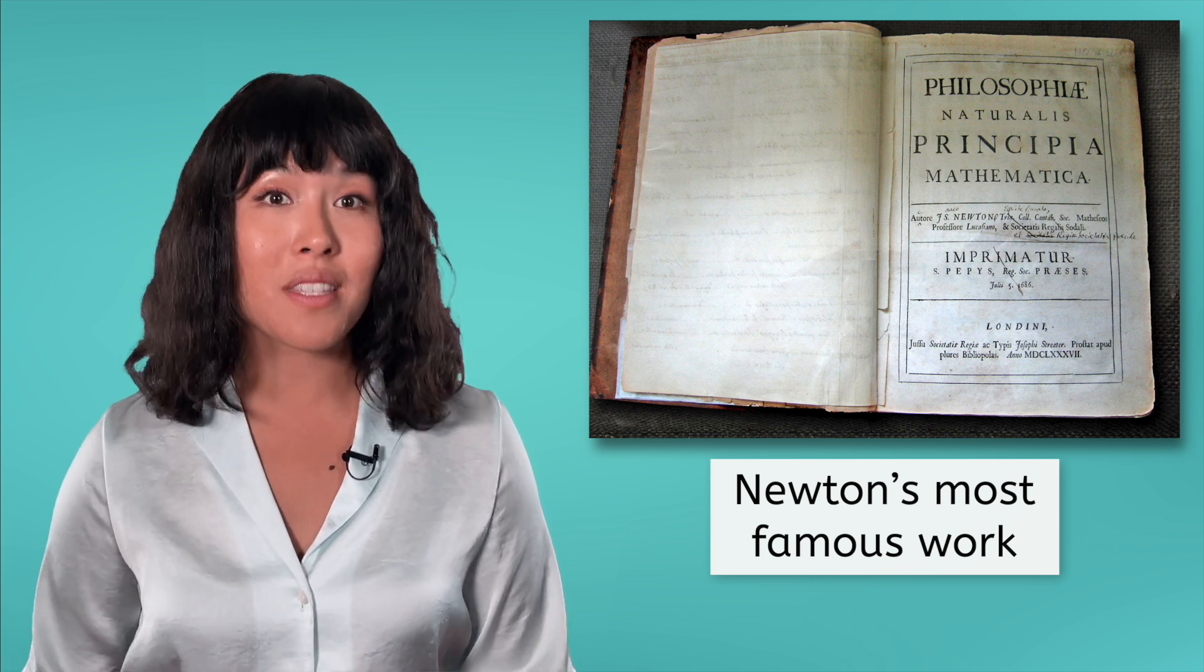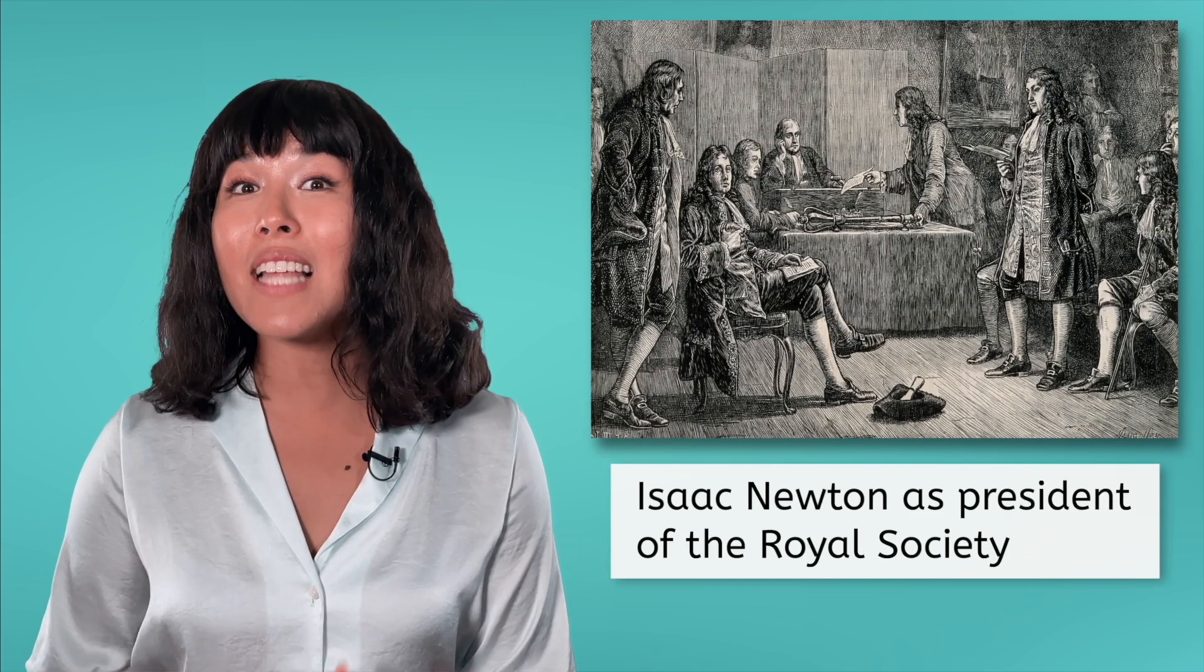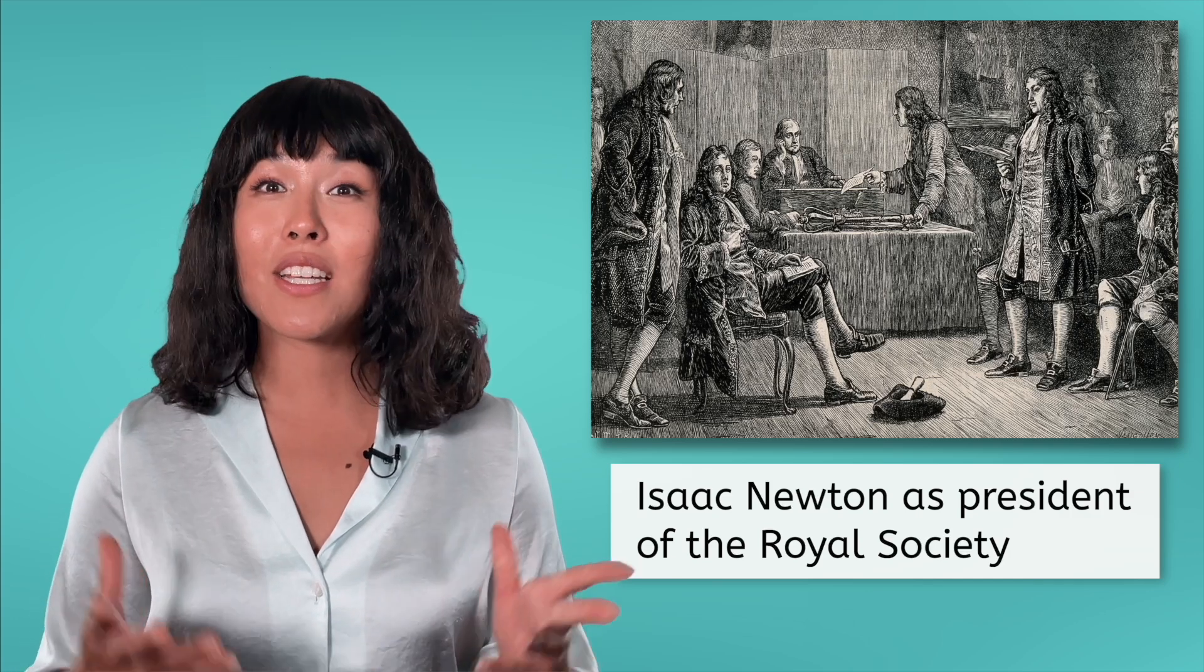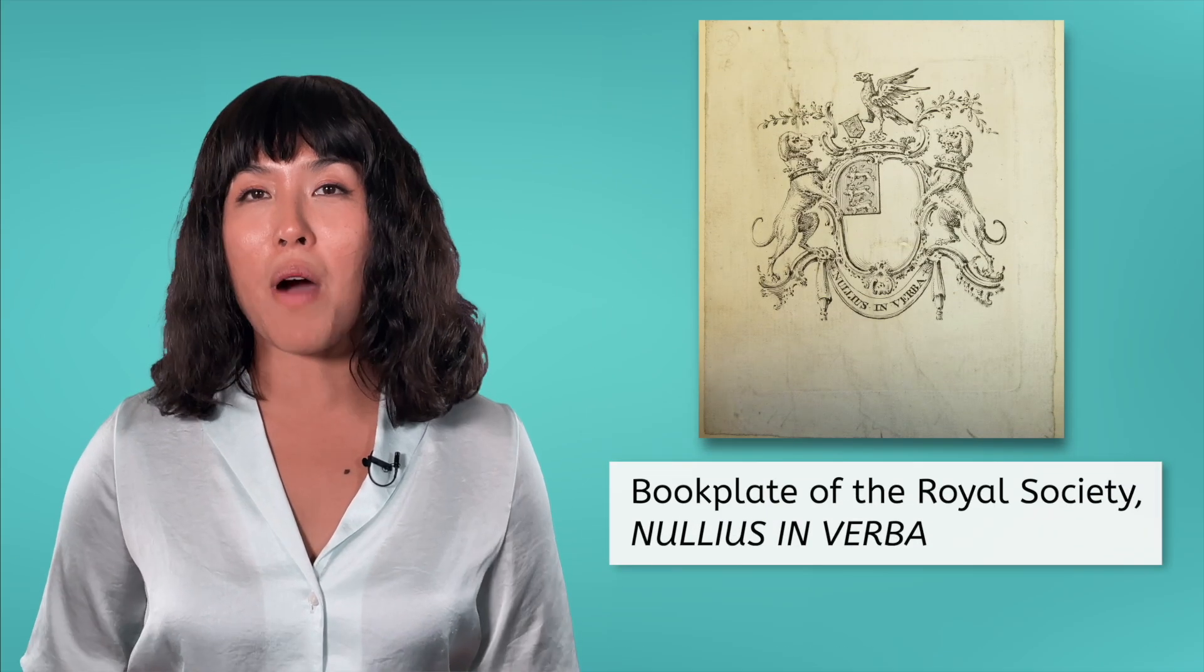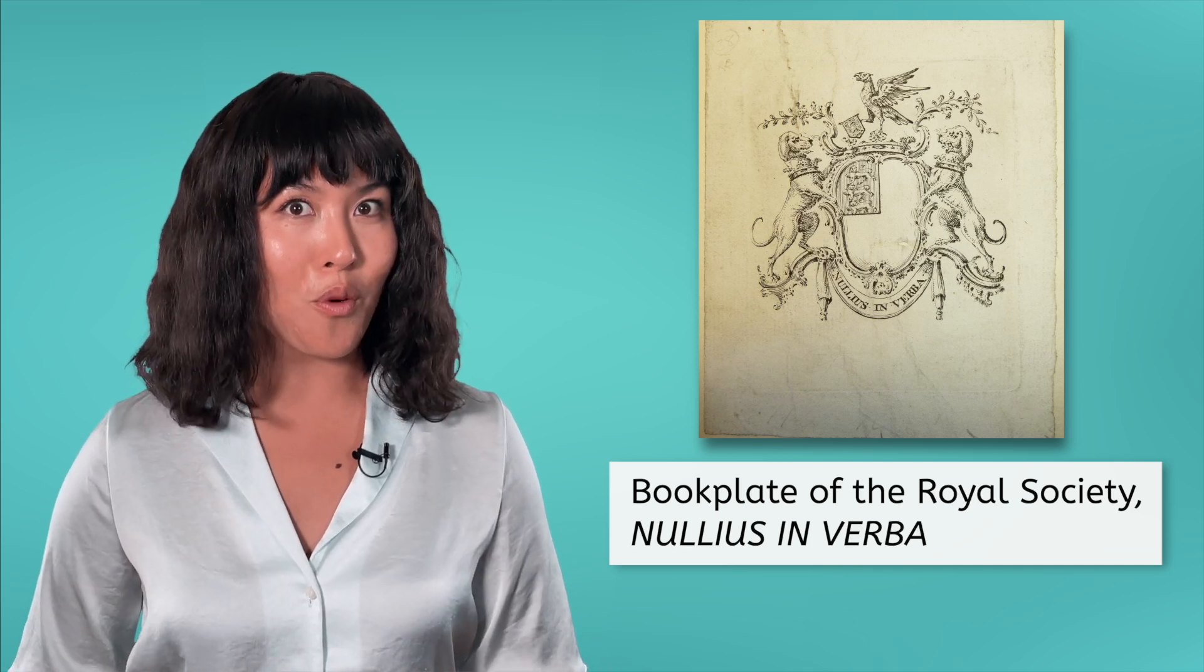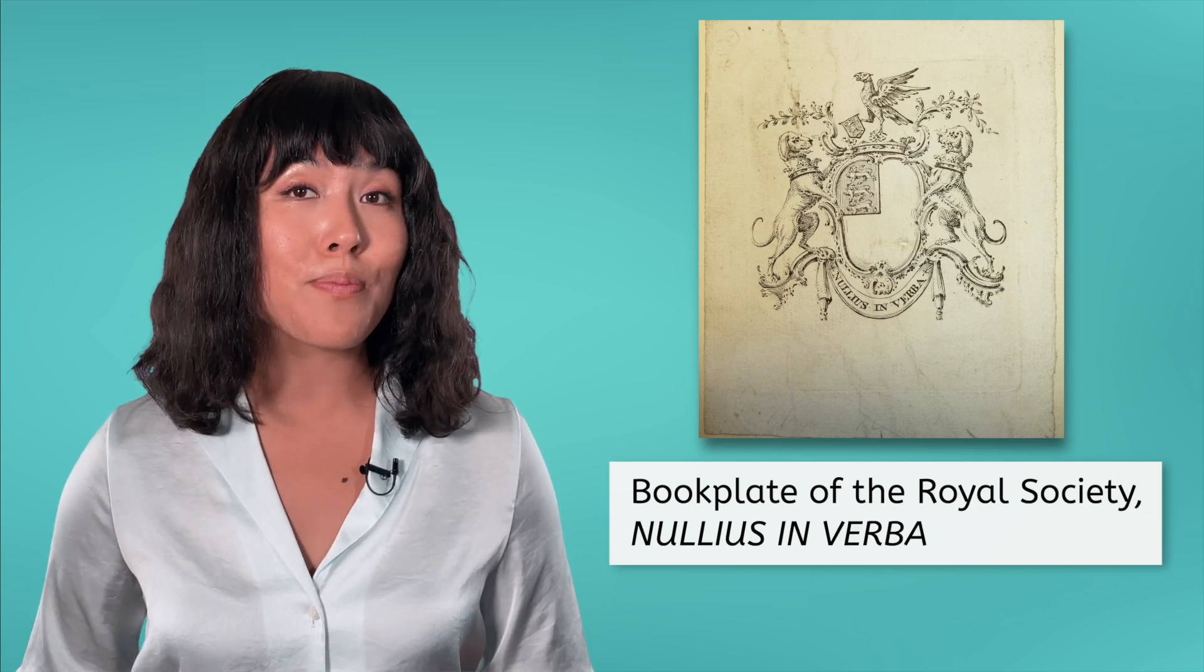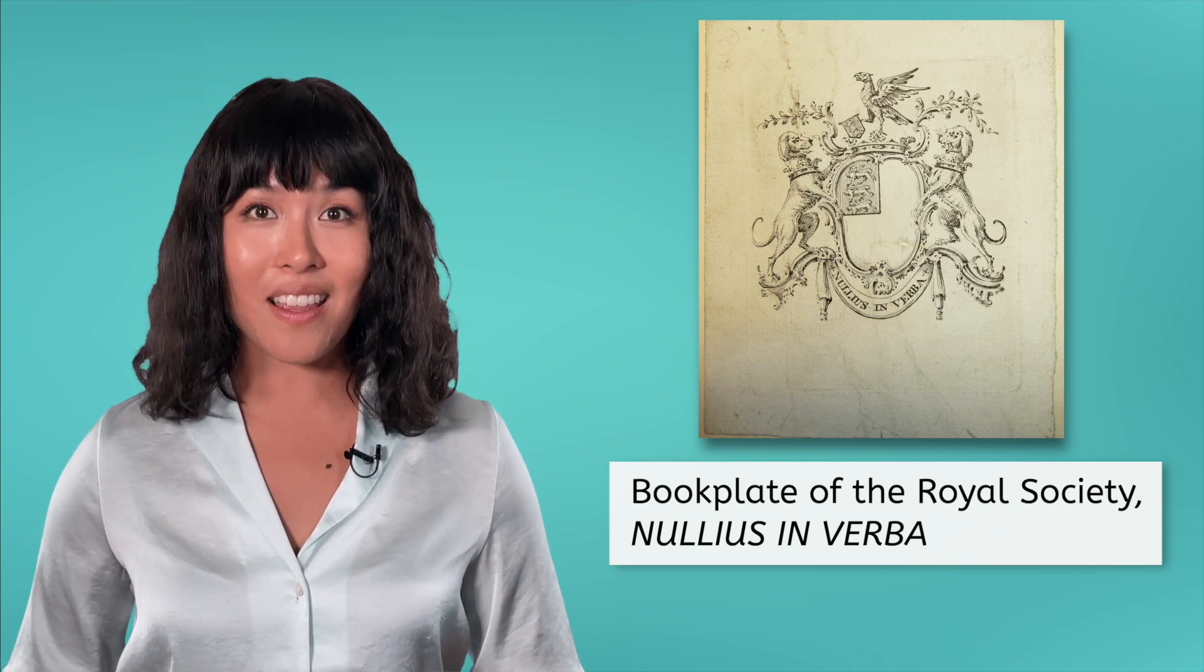After the publication of the Principia, Newton became famous as a renowned scientist and was elected president of the Royal Society in 1703. In the 1700s, the Royal Society of London was considered one of the most prestigious scientific institutions in the world and held as their motto, nullius in verba, which can loosely be translated to, take no one's word for it. This motto emphasized their belief in evidence and experimentation, rather than accepting something just because a respected authority said it. Strangely enough, this was a revolutionary idea at the time.